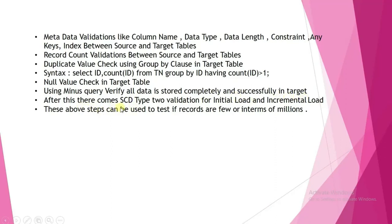After this, SCD Type 2 validation comes for initial load and incremental load. These above steps can be used to test whether records are few or in terms of millions. Many people ask me how to validate records in millions — by using these same high-level validation steps. It doesn't matter if records are few or millions; these steps work for both.